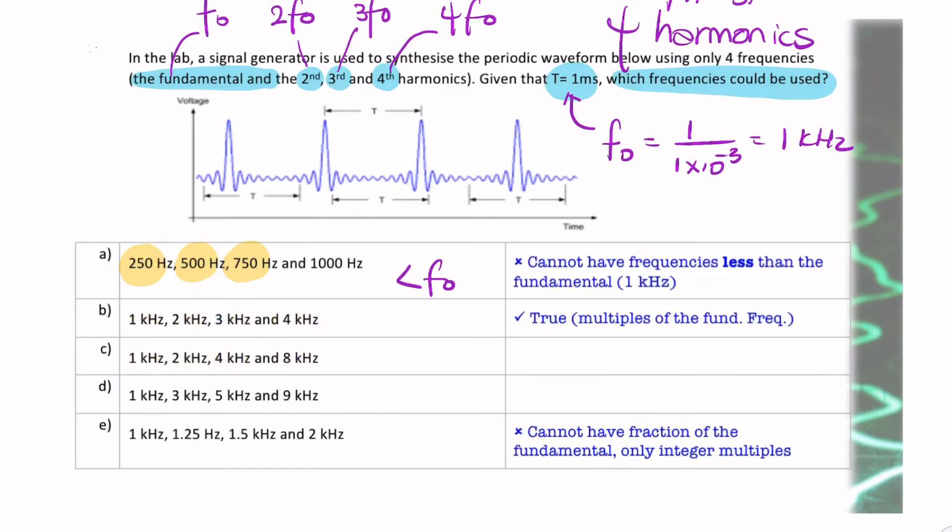The next question, sorry, so this is correct. The next one says 1, 3, 5, and 9. Same reason. As long as it's not 1, 2, 3, and 4, it's wrong.